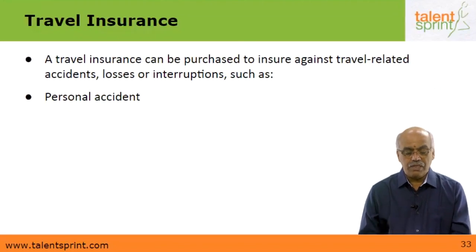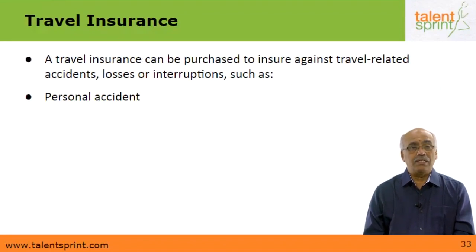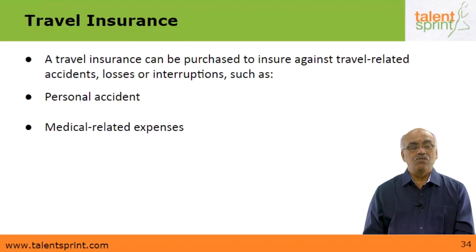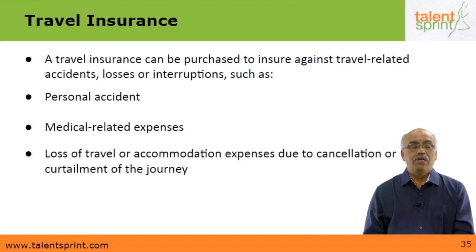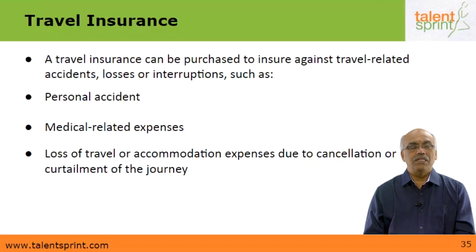Travel insurance can be purchased to cover travel-related accidents, losses or interruptions — such as personal accident or medical-related expenses. You could travel and fall sick, and you can be insured against that. Or there could be loss of travel or accommodation expenses due to cancellation or curtailment of the journey. For example, if you are flying from Delhi to New York and the flight is grounded in Frankfurt and does not take off, your journey is either cancelled, curtailed or postponed, and the insurance company will provide for the losses arising out of such cancellation.